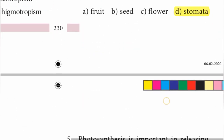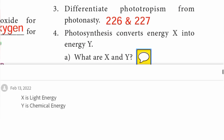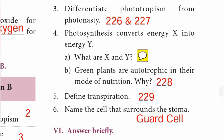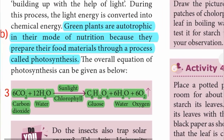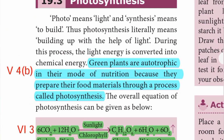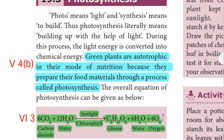Fourth one: photosynthesis converts energy X into energy Y. (a) What are X and Y? X is light energy, Y is chemical energy. (b) Green plants are autotrophic in their mode of nutrition - why? Because they prepare their food materials through a process called photosynthesis.